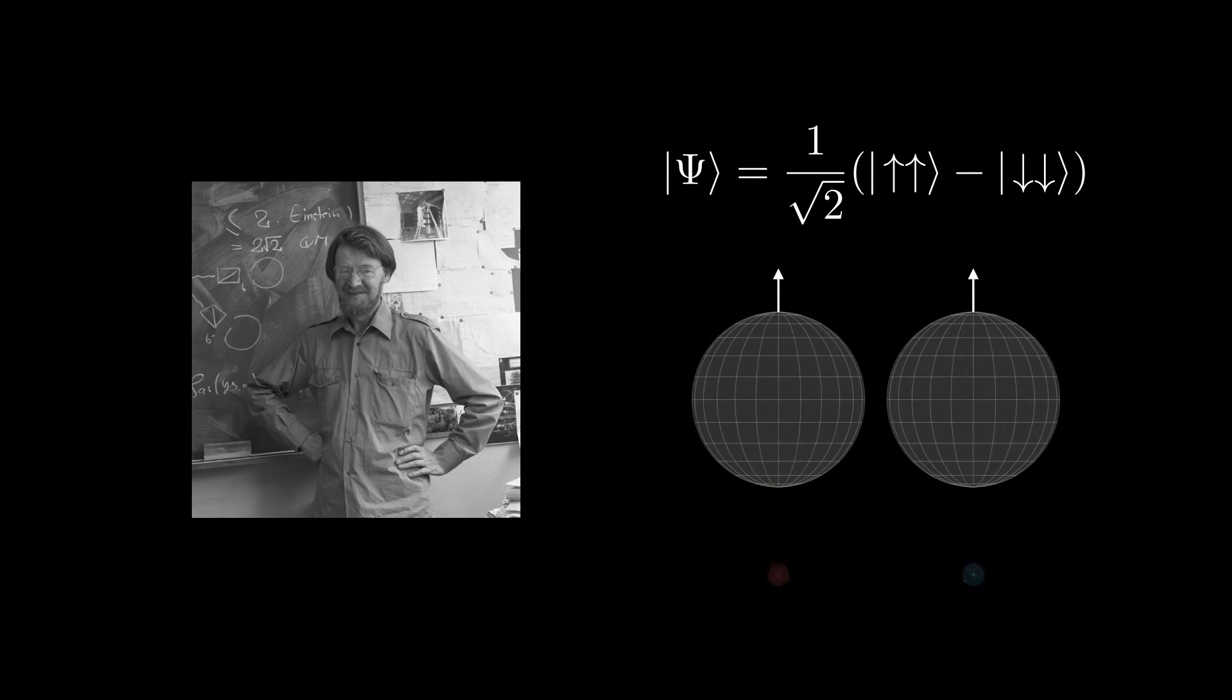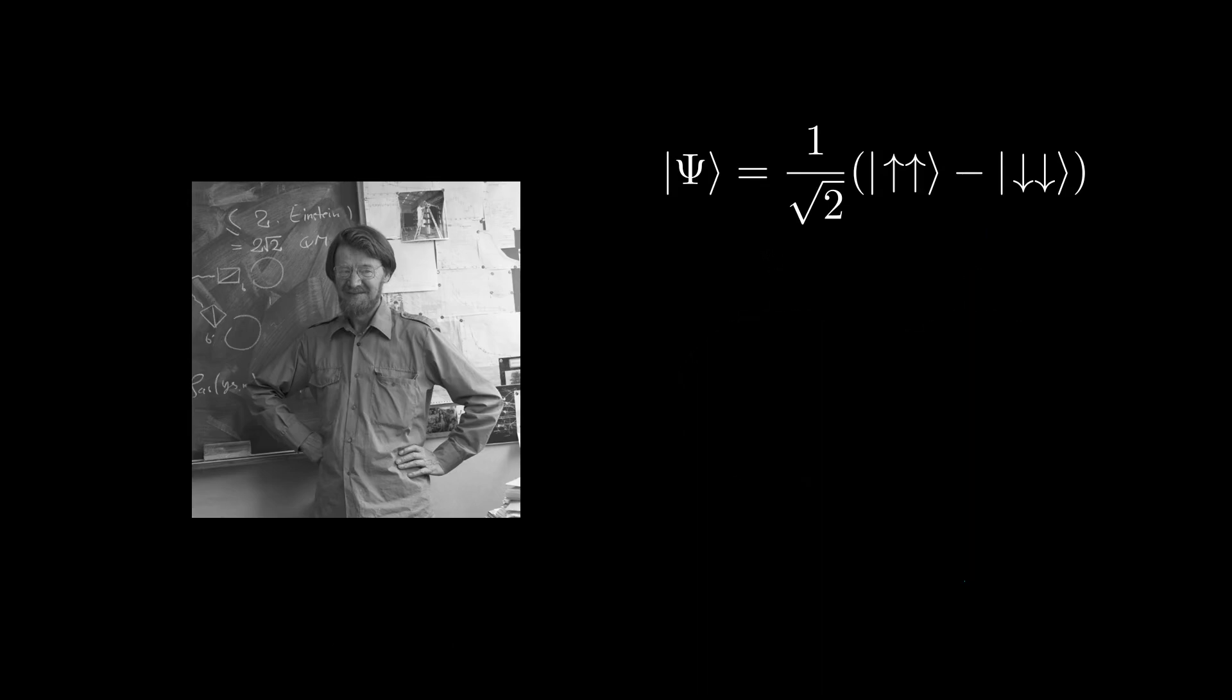And again, I repeat, the minus sign is there to encode information on what happens if the detectors are not necessarily both pointed in the Z direction.